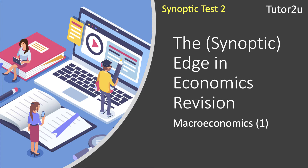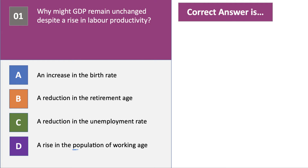Welcome to synoptic test number two. Here are ten macroeconomics multiple choice revision questions, allowing you to check your macroeconomics ahead of synoptic papers. Question one: why might GDP remain unchanged despite an increase in labor productivity? Press the pause button and have a go.